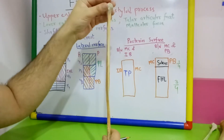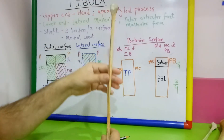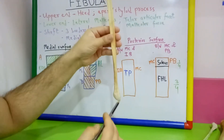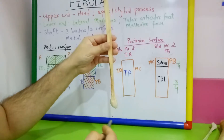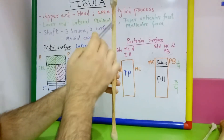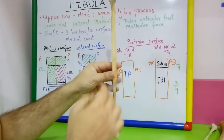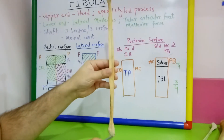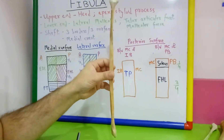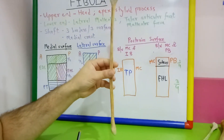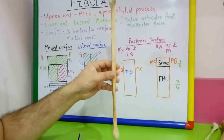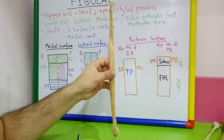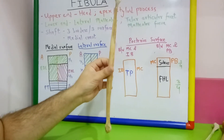Being a typical long bone, it has two ends — upper end, lower end — and a shaft. Now the upper and lower end look very similar to each other, so how do we differentiate the two ends and determine the side of the fibula?